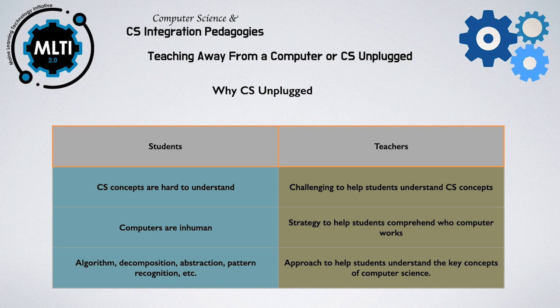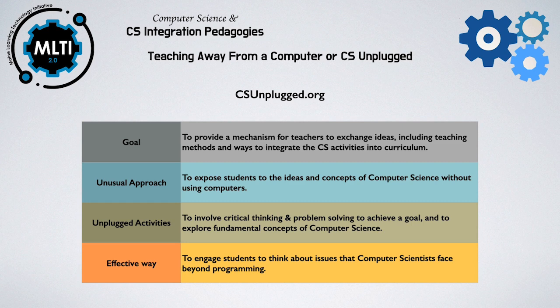In order to address these challenges, the Computer Science Unplugged strategy was implemented. The strategy involves the use of hands-on and practical activities to help students understand how computers work and the key concepts of computer science. According to Tim Bell, having activities away from computers is effective because children generally know the computer as a toy or tool rather than the subject of study in itself. By stepping away from the computer, they are able to think about issues that computer science faces beyond simply programming.